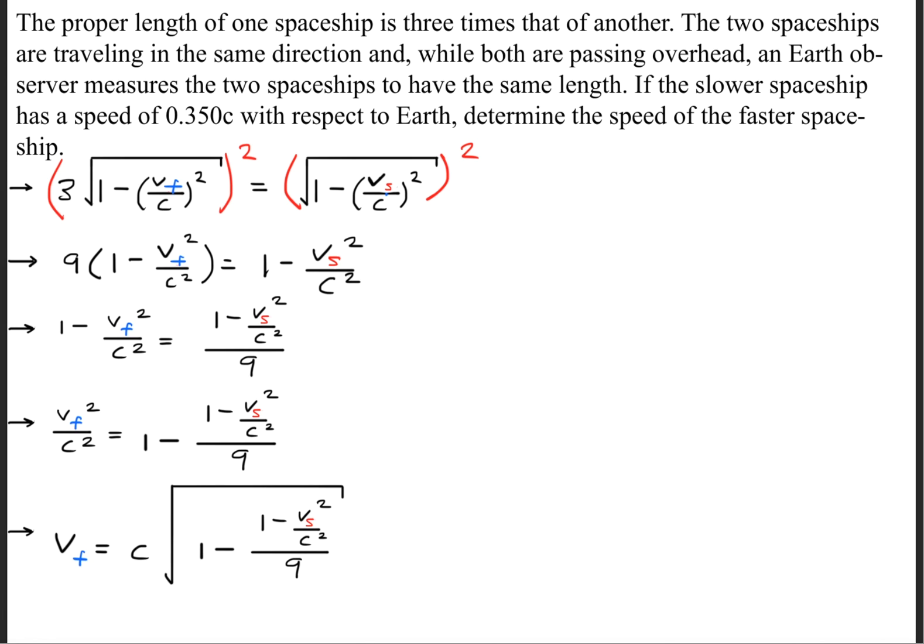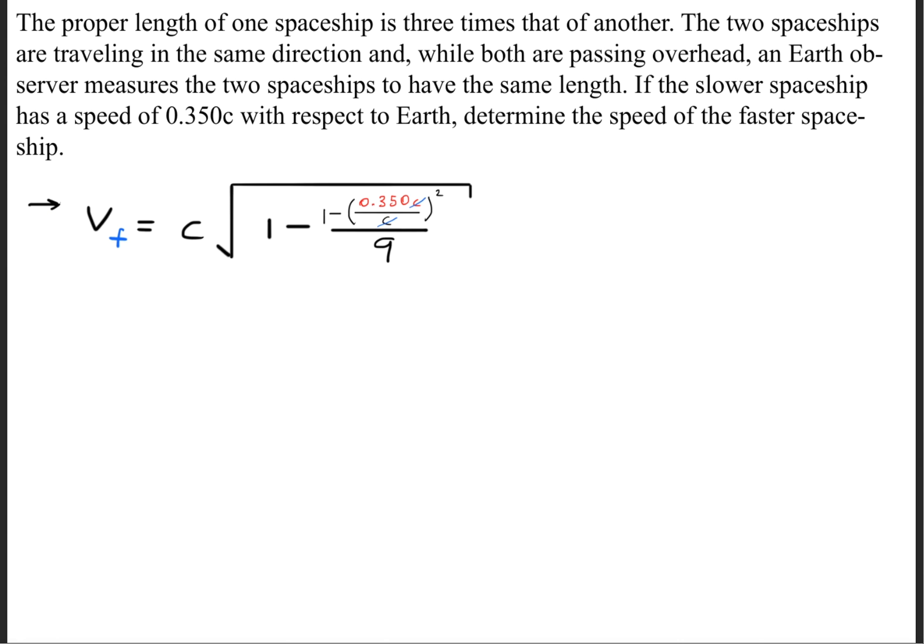The last thing we need to do is we need to take the square root of both sides and we need to cross multiply so that we get V sub F is equal to C times the square root of 1 minus 1 minus V sub S squared divided by C squared divided by 9. The next thing we need to do is take this given information here that the speed of the slower spaceship is 0.350 times the speed of light and go ahead and plug that in so that we get this form right here.